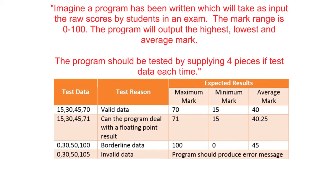The difference here is that when the four scores are averaged, it will produce an average mark of 40.25. So we're testing valid data, but also testing whether the program can deal with a floating point result. We must also make sure to test borderline data, including the value 0 at the lower end and 100 at the upper end. We should have a maximum of 100, a minimum of 0, and an average of 45.